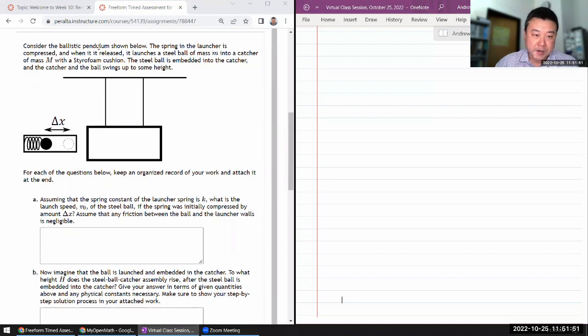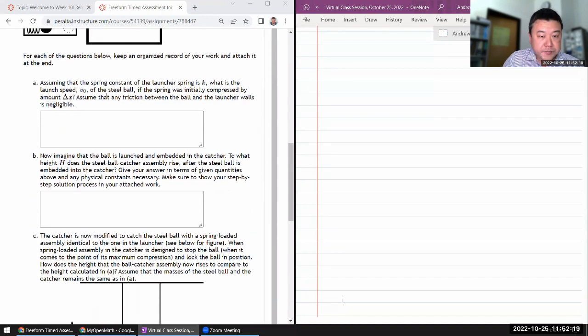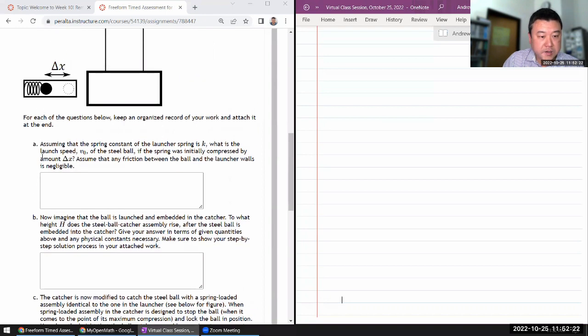It says consider the ballistic pendulum shown below. The spring in the launcher is compressed and when it is released it launches a steel ball. This is the lab that you are doing this week. I think we did the conservation of energy lab. The steel ball is embedded into the catcher and the catcher swings upward. Assuming that the spring constant of the launcher is K, what is the launch speed V-naught of the steel ball if the spring was initially compressed by delta X? It feels like I can just use conservation of energy.